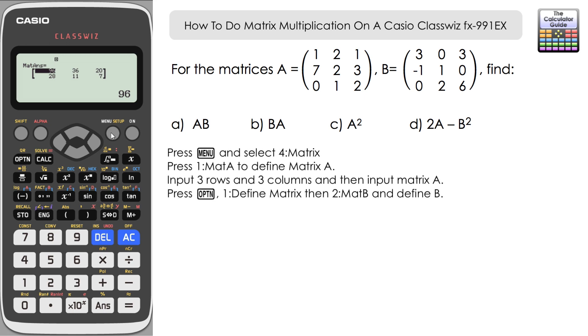Best idea is to come out of matrix mode back to the menu and go back in and then redefine matrix A and matrix B, this time with three rows and three columns. And then have a go at the calculations. And I'll be back in just a moment with the answers.